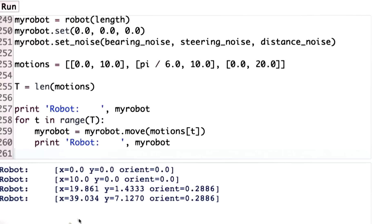And now we steer. This affects x. It doesn't quite move 10. It only moves 9.86. In y direction, it moves 1.433, and its new orientation is 0.2886. And then we move straight again, and now the x-coordinate becomes 48.3903, y-coordinate becomes 7.12, orientation 0.28.